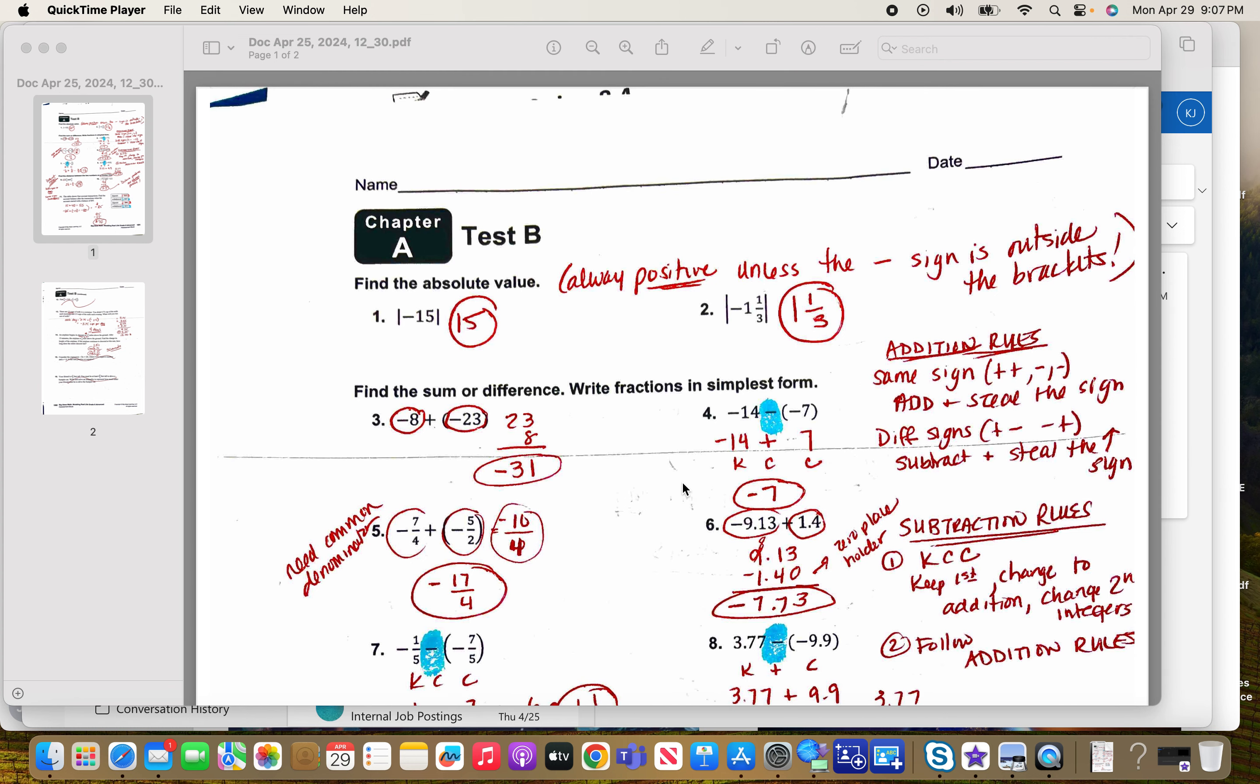All right, so you have to find the absolute value. Remember, absolute value means distance from zero. So that value is always going to be positive unless there is a negative in front of the brackets, which we don't see any here. So the absolute value of negative 15 is a positive 15. That just means that it's 15 spaces away from zero. It doesn't matter if it's behind or ahead of it. Over here, the absolute value of negative 1 and 1 third is 1 and 1 third.